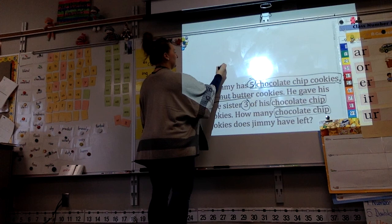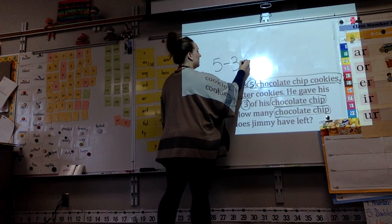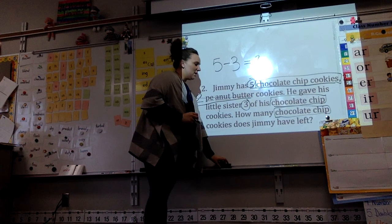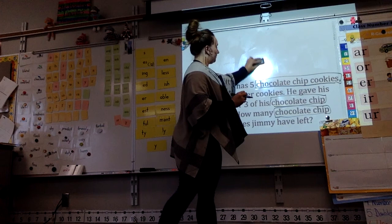But since I do know that there were five to start with, and he gave his sister three of his chocolate chip cookies, taking away three of his cookies, I can figure out this problem. That means there was enough information, but there was extra stuff that I didn't need. So five minus three is two. So this one had too much information. And we'll move on to one more.